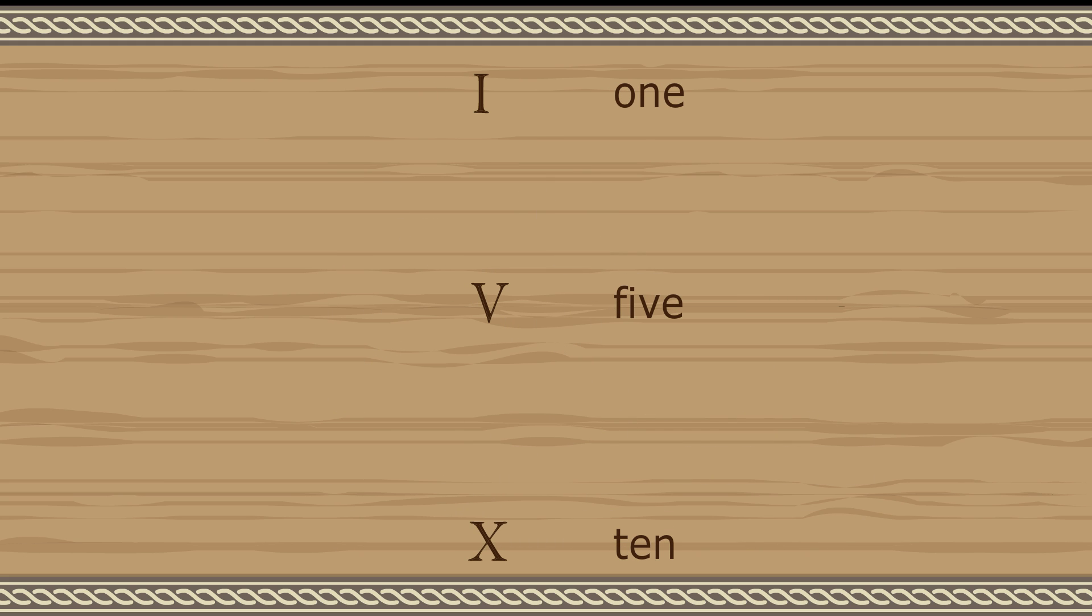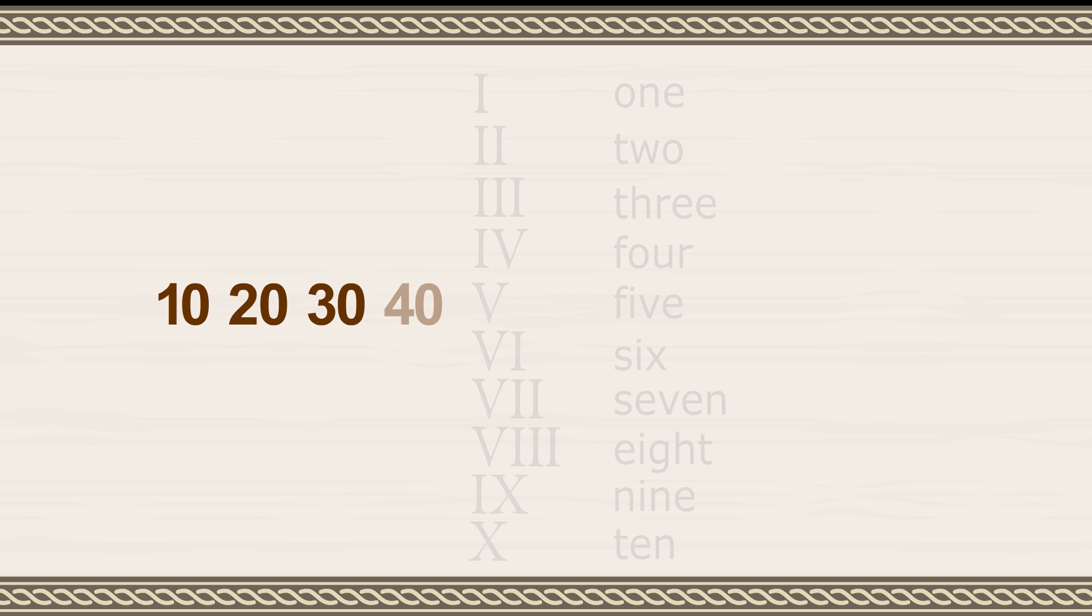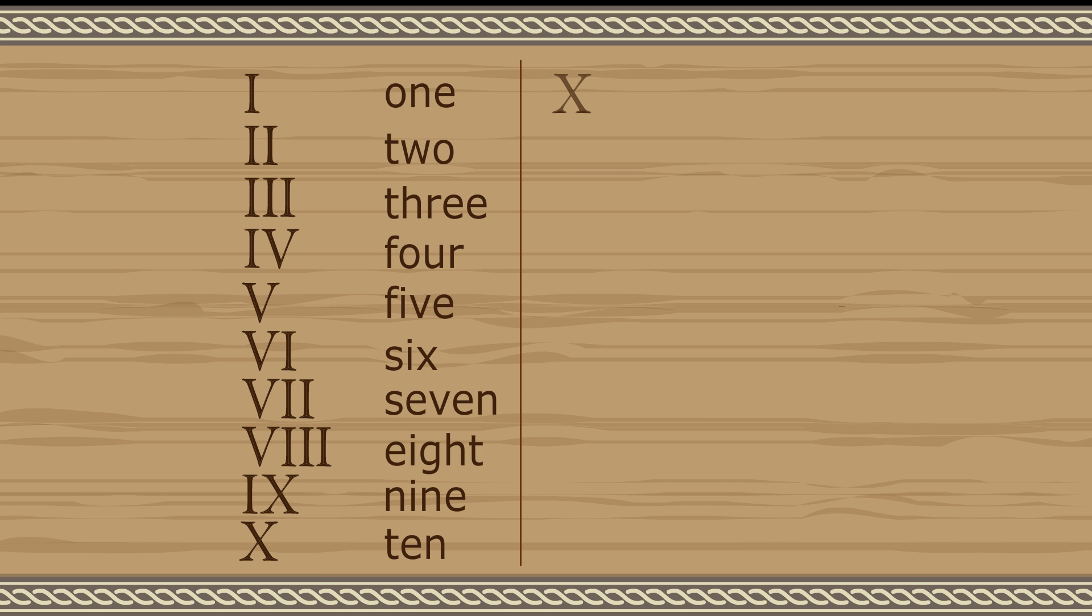The quantities 2 and 3 are represented by 2 or 3 I's. The quantities 6, 7, and 8 are represented by the symbol for 5, V, followed by 1, 2, or 3 I's. And the quantities 4 and 9 are represented by the symbols for 5 or 10, V and X, preceded by an I. The numbers 10 through 100 follow the same pattern except that the symbols X, L, and C are used to represent 10, 50, and 100.